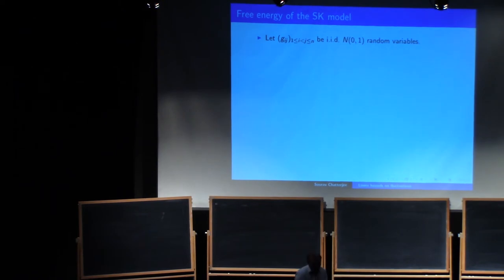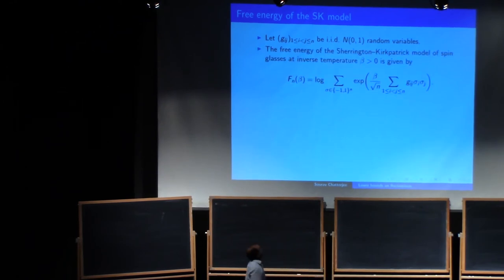Oh, no, there's one more example. Okay, again, just one slide. So I'll not tell you anything about this Sherrington-Kirkpatrick model, I'll just tell you the problem. So suppose you have these i.i.d. normal variables, and the free energy of the Sherrington-Kirkpatrick model of spin glasses is given by this, log of the sum over the hypercube of e to the beta over root n summation gij sigma i sigma j. And then the best known upper bound on the variance of this free energy is n over log n. That's a result that I proved some time ago.